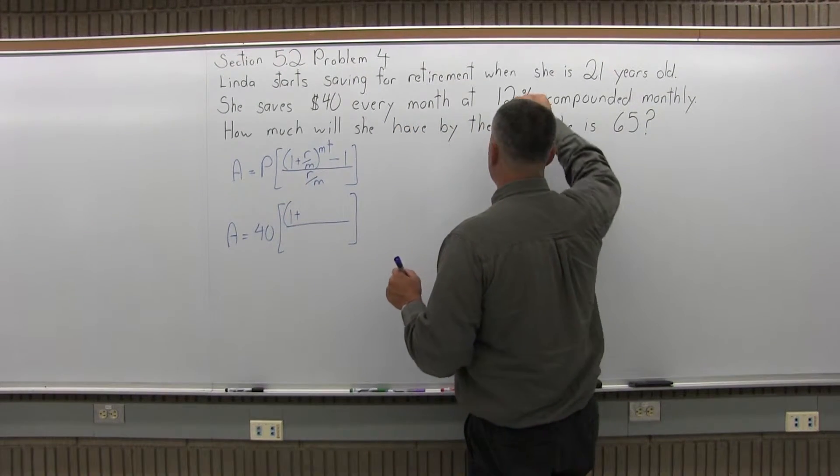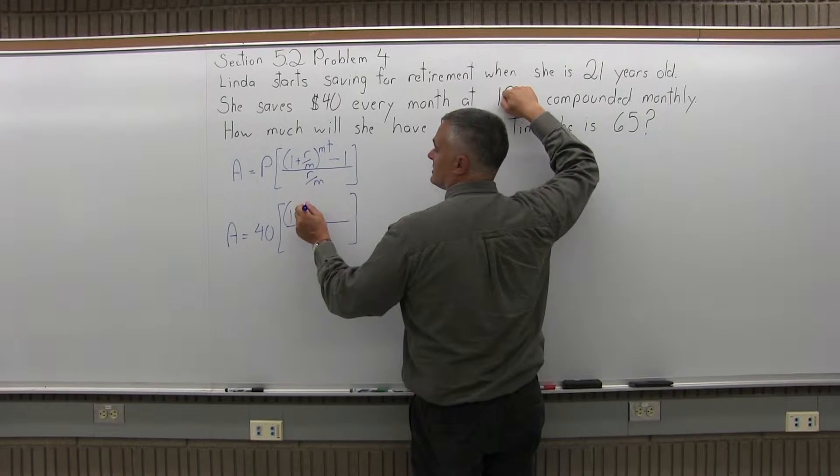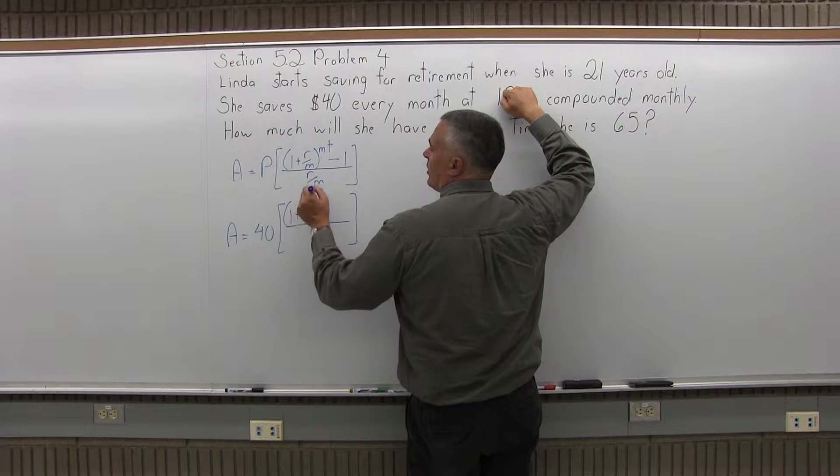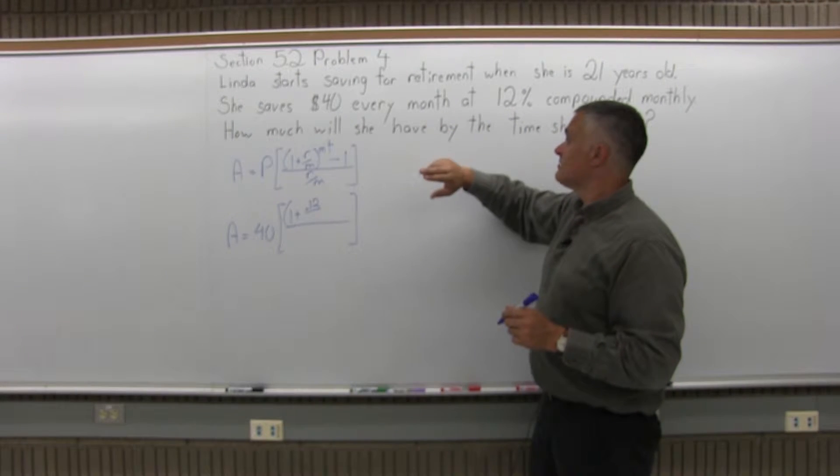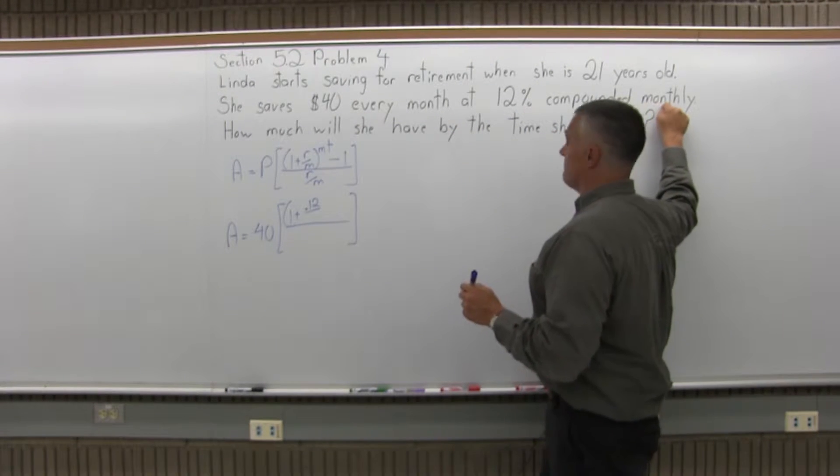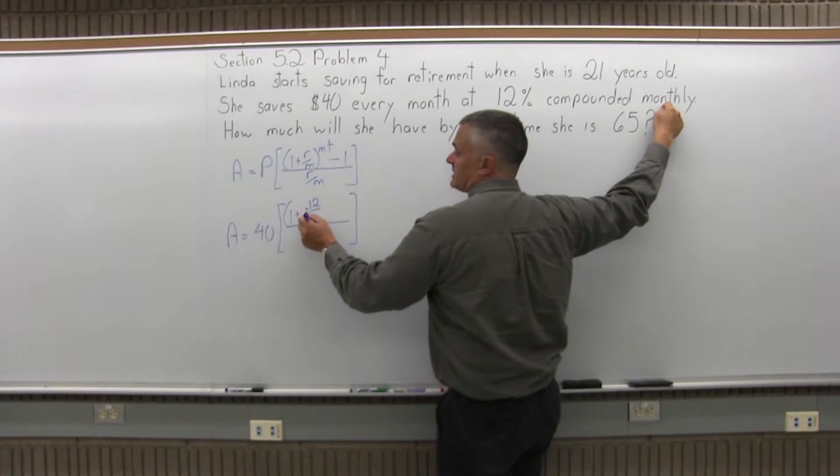The R, the rate, as a decimal, 12% goes into the formula as 0.12. And over M, the M is how often you compound per year. So because this is monthly compounding, M is 12, 12 months in a year. You close the parentheses.